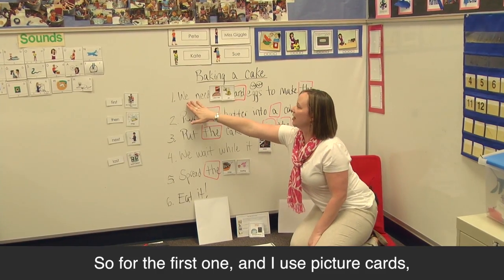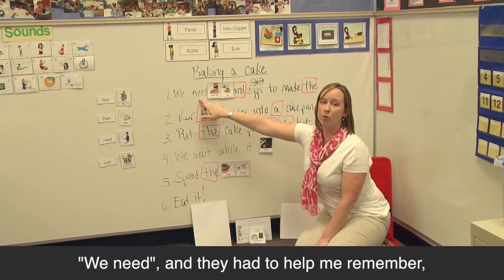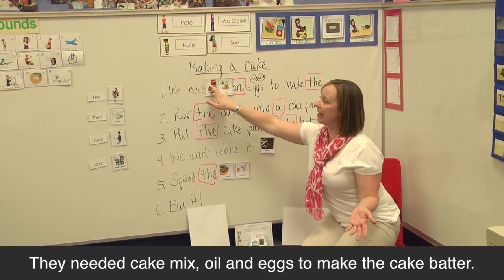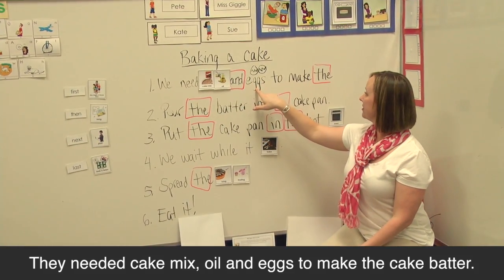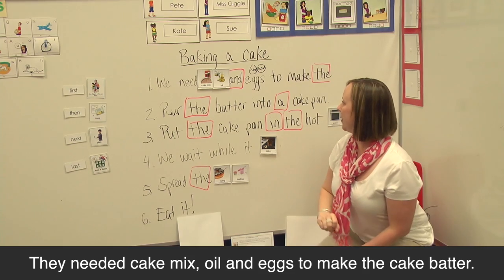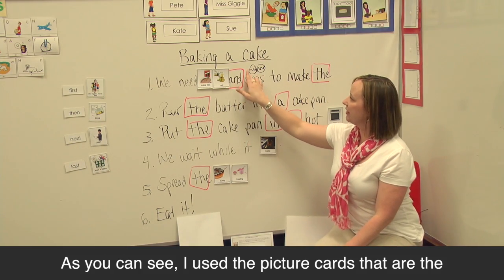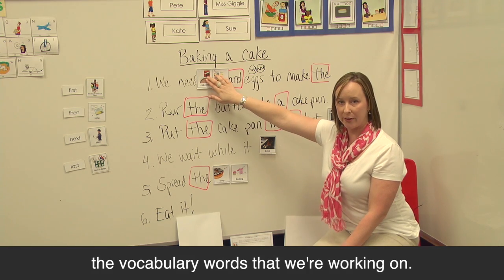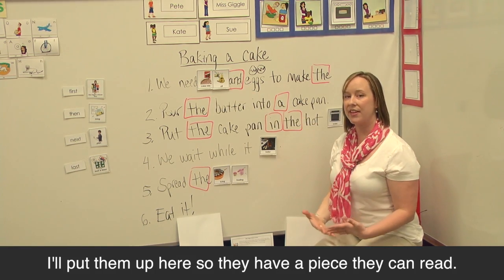For the first one I use picture cards: we need — and they had to help me remember — what do you need to make a cake? They need a cake mix, oil, and eggs to make the cake better. I use the picture cards that are the vocabulary words we're working on, and I put them up here so they have a piece that they can read.